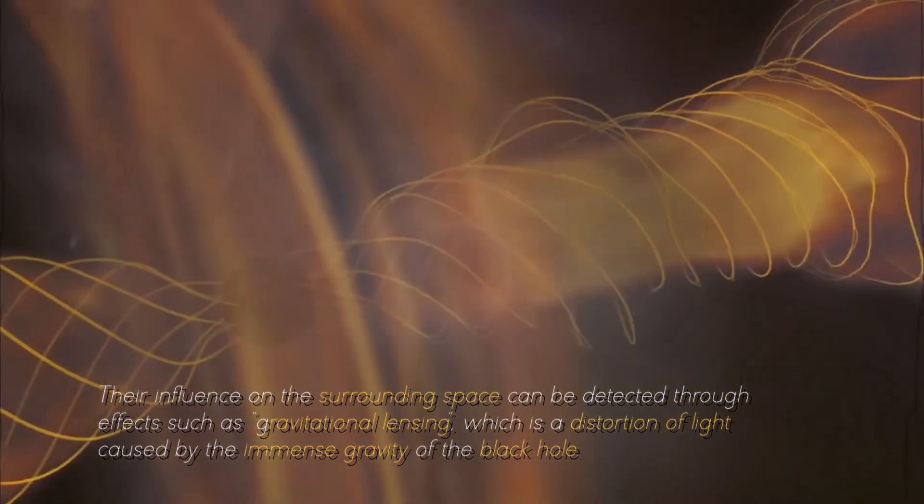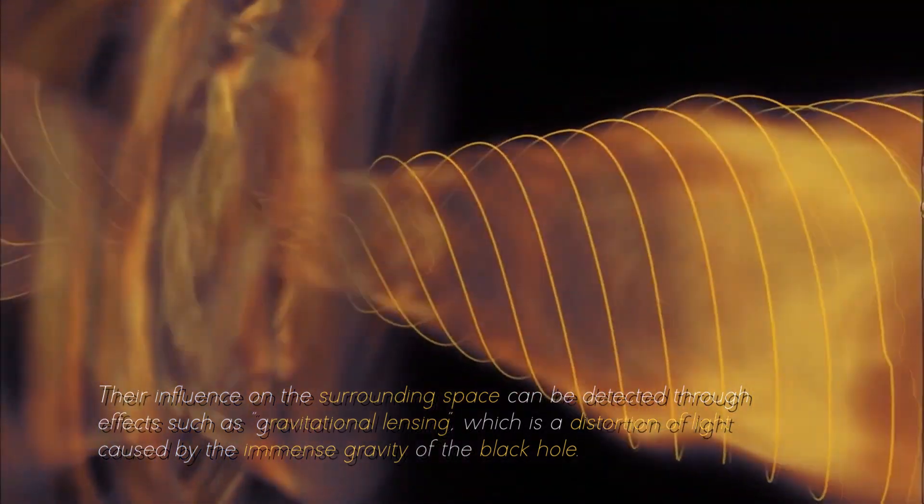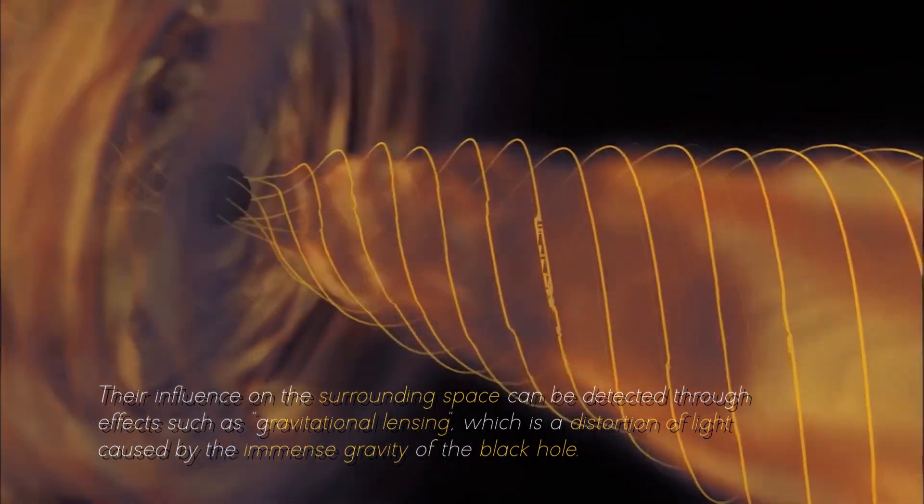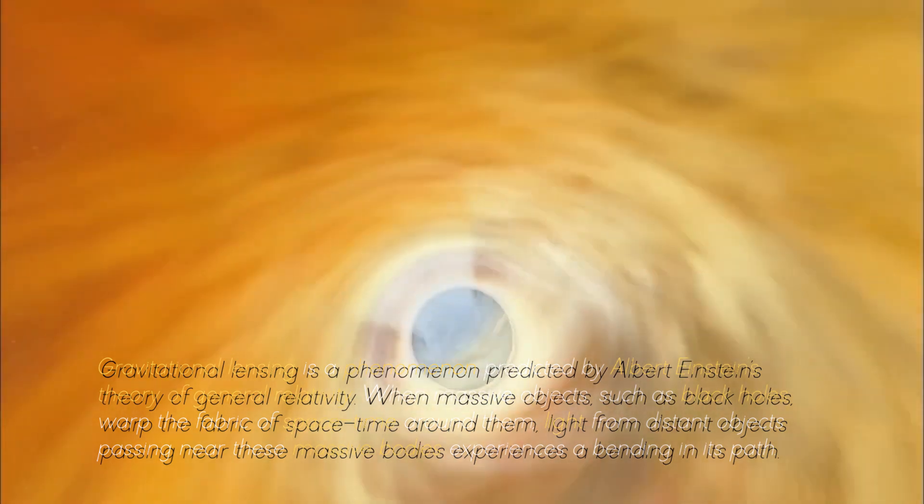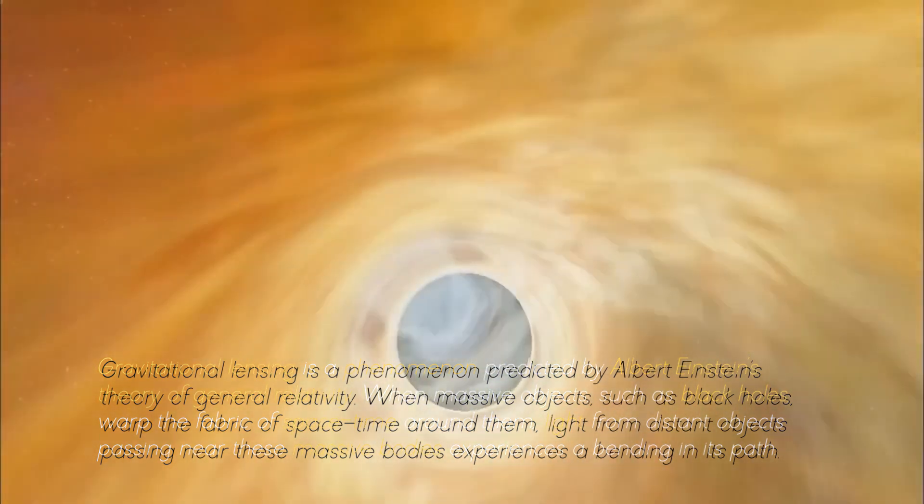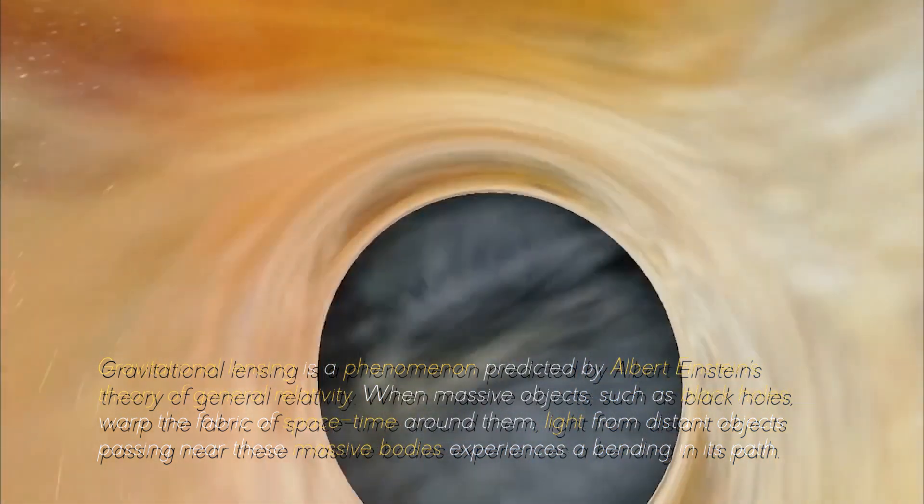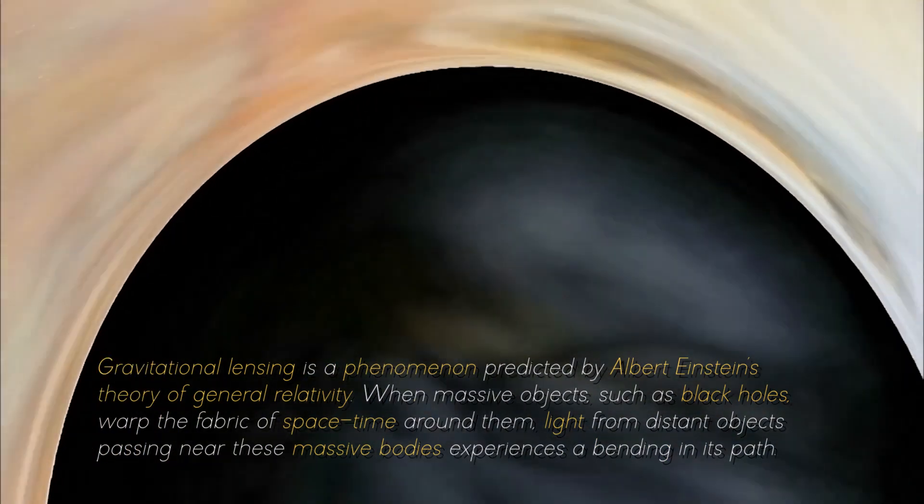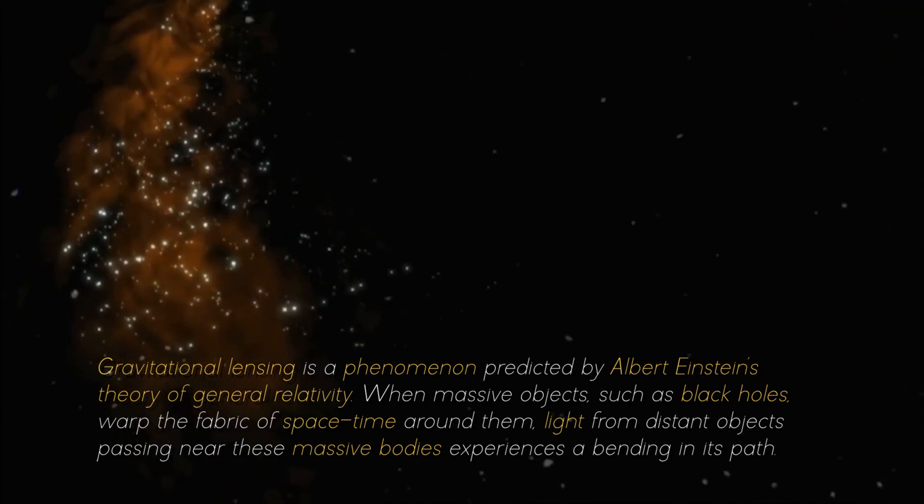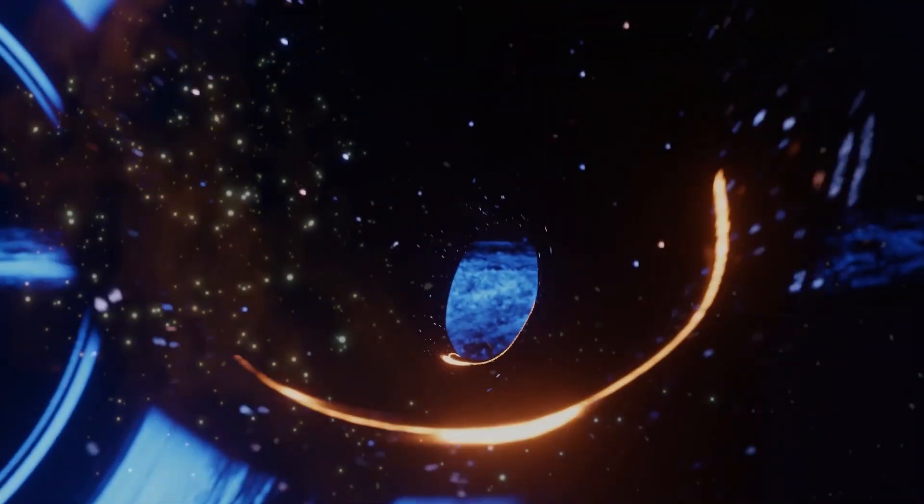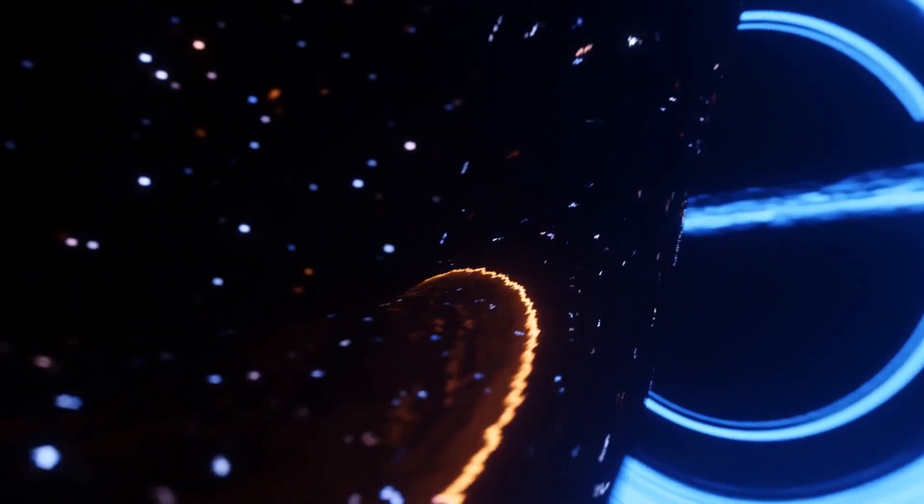Their influence on the surrounding space can be detected through effects such as gravitational lensing, which is a distortion of light caused by the immense gravity of the black hole. Gravitational lensing is a phenomenon predicted by Albert Einstein's theory of general relativity. When massive objects, such as black holes, warp the fabric of space-time around them, light from distant objects passing near these massive bodies experiences a bending in its path.